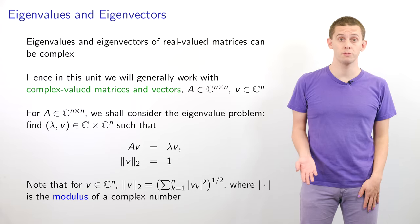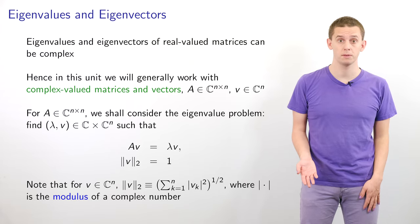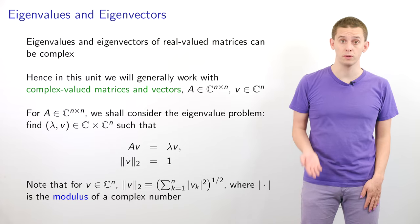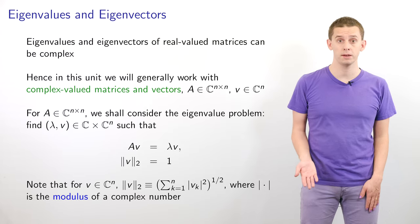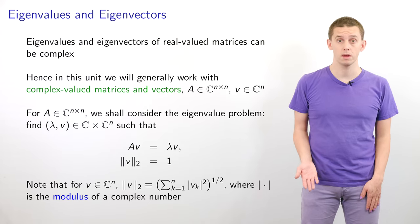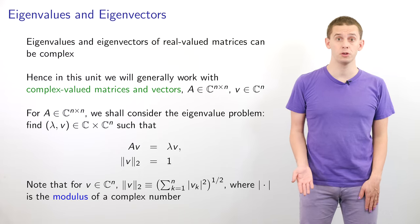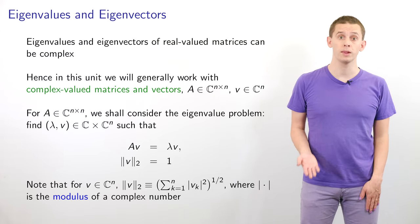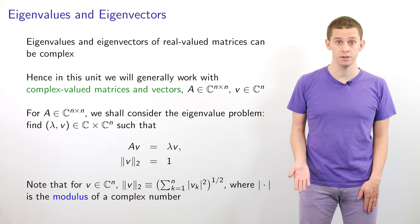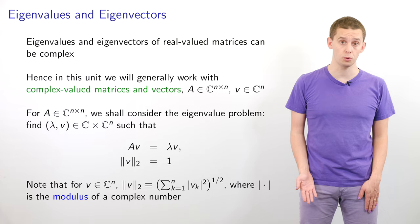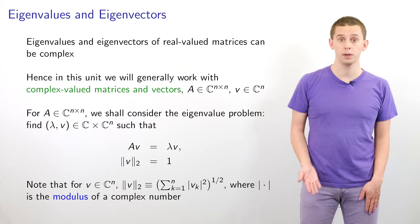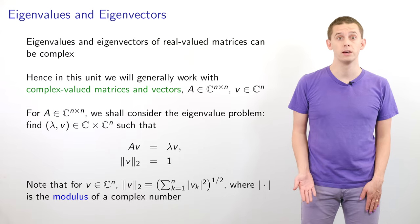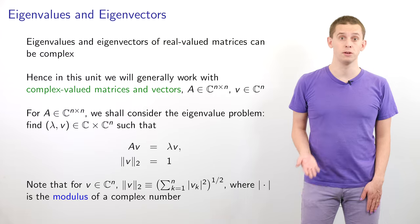Eigenvalues and eigenvectors of real-valued matrices can be complex, and therefore in this unit we'll generally work with complex-valued matrices and vectors. So suppose that A is a complex n by n matrix. We'll consider the eigenvalue problem where we search for pairs of an eigenvalue lambda and corresponding eigenvector v such that A times v is equal to lambda times v. We can scale v by an arbitrary constant and will therefore enforce that the Euclidean norm of v is equal to 1.